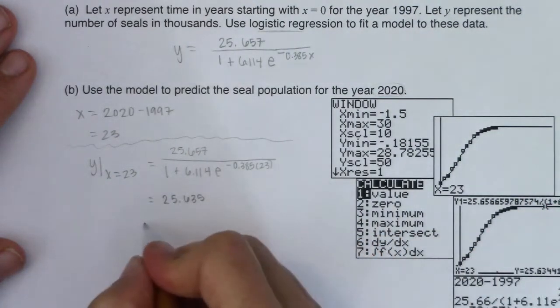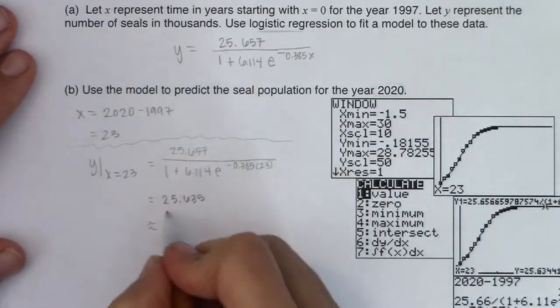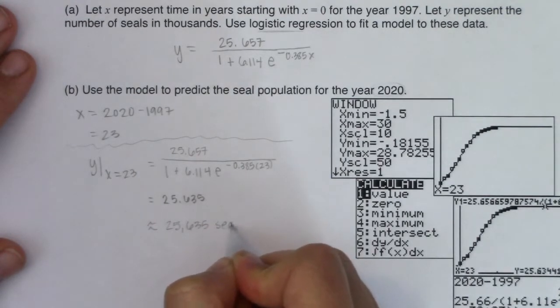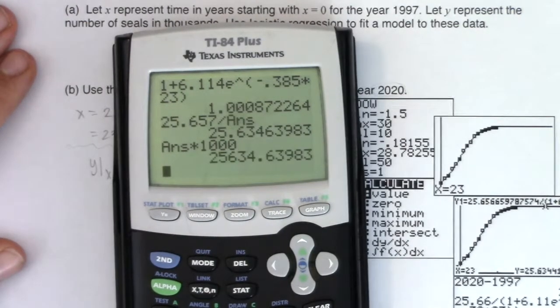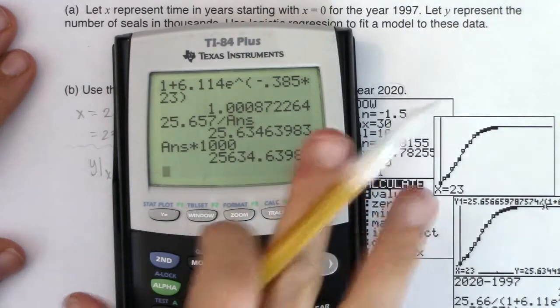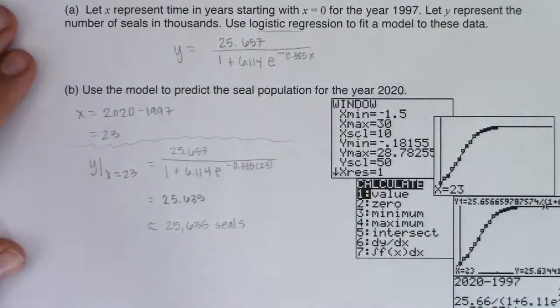Now keep in mind, this was in thousands. So this means that in the year 2020, I'm going to have about 25,635 seals, right? Because if I were to multiply that number by 1,000, that's what I would get. 25,634 seals-ish, maybe 635, but pretty close to it. So this is all fine and good. I find it a little cumbersome to plug that into my calculator and then have to do the denominator first and then numerator divided by denominator.